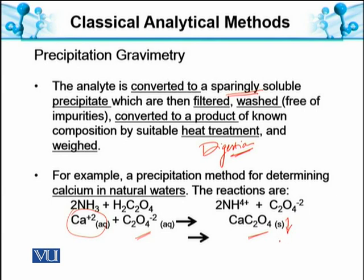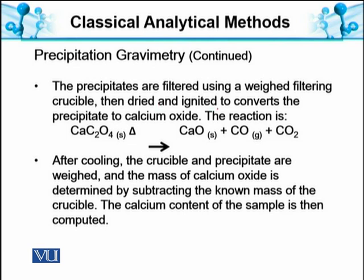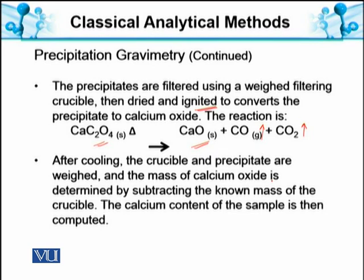Calcium oxalate solid material precipitate out ہو جائے گا۔ The precipitates are filtered using a pre-weighed filtering crucible — پہلے سے weigh کیا گیا crucible — پھر dried اور ignited کریں گے تاکہ calcium oxide بنے۔ Ignition سے calcium oxalate heat ہو کر calcium oxide بنتا ہے اور carbon monoxide، carbon dioxide gases evaporate ہو جاتی ہیں۔ After cooling, the crucible and precipitate are weighed and the mass of calcium oxide is determined by subtracting the known mass of the crucible، اور اس سے calcium content calculate کی جا سکتی ہے۔